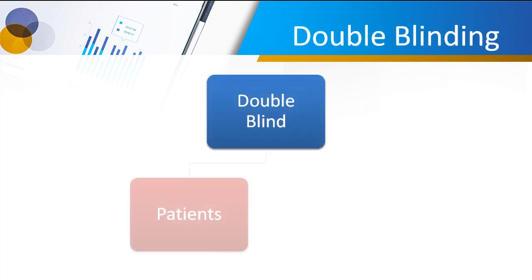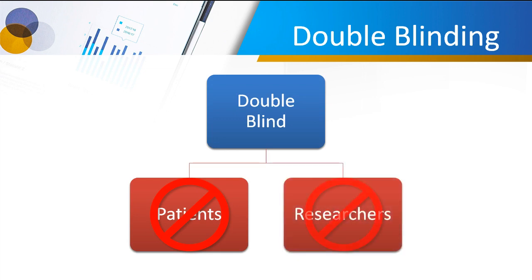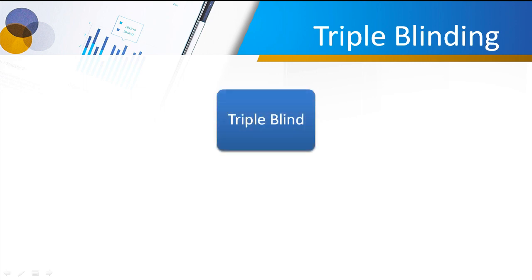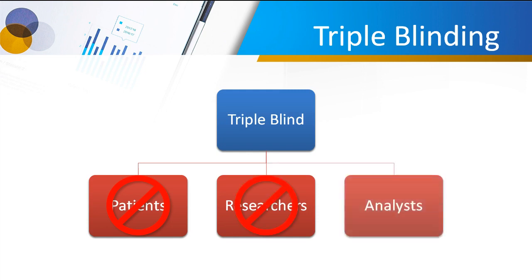We've got double blinding, where the patients don't know and neither do the researchers. And in triple blinding, the patients don't know, the researchers don't know, and the analysts don't know. It's only later, when you open up the black box — the instructions that tell you what to do — that you find out which patients are in which group and which treatment they're getting.